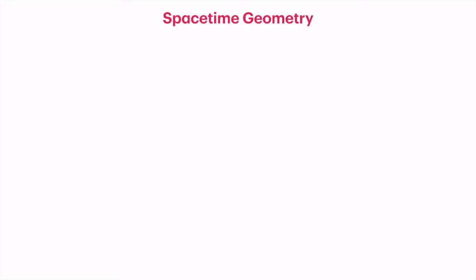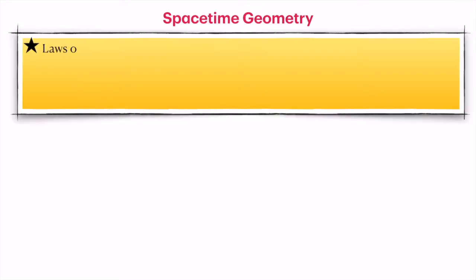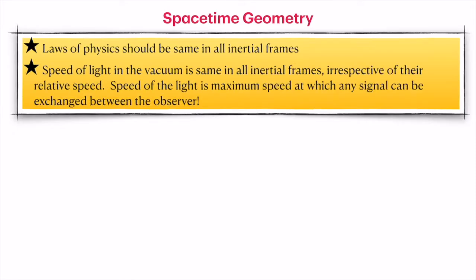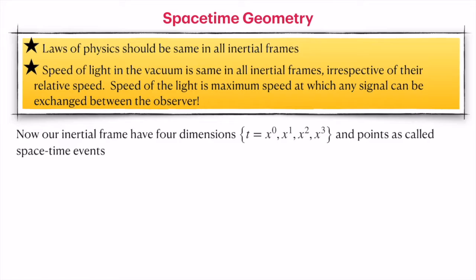Let's quickly recollect the geometry of special theory of relativity, or space-time geometry. We have two postulates: one says that laws of physics should be the same in all inertial frames, and the second says that the speed of light in vacuum is the same for all frames irrespective of their relative speed. The speed of light is the maximum speed at which any signal can be exchanged. We must incorporate these two principles to get a transformation from one inertial frame to another consistent with the postulates, leaving Maxwell's equations invariant.